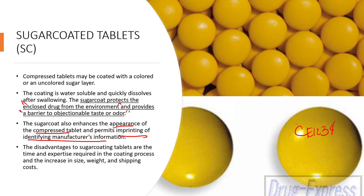The main disadvantage of sugar coated tablets is, number one, they add a significant amount of bulk to your tablets, which increases weight and transportation costs. Another disadvantage is that sugar coating is a lengthy process — you add an extra step to your tablet compression and you need a certain amount of expertise in sugar coating tablets.